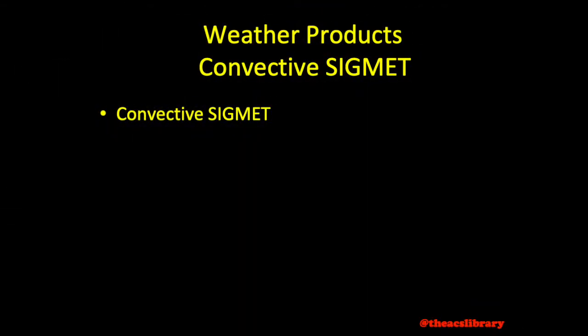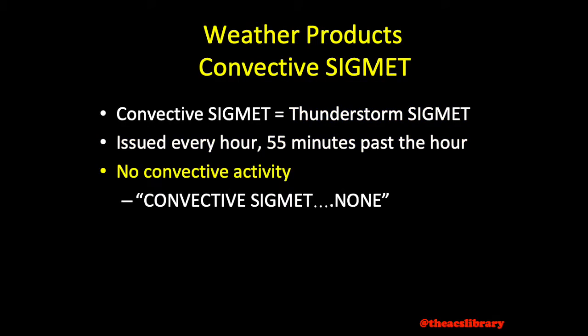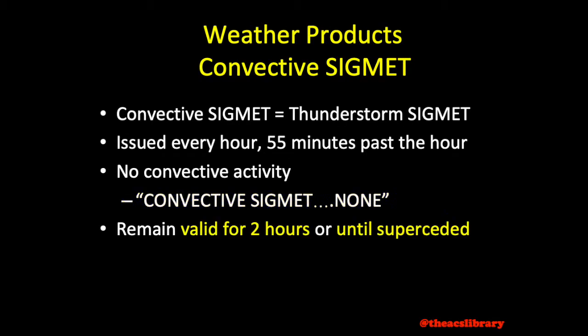Convective sigmets, or sigmets related to thunderstorms, are issued hourly at 55 minutes past the hour. If no convective conditions are encountered, a convective sigmet "none" message will be transmitted. Unscheduled sigmets may be issued as conditions require. Convective sigmets remain valid for two hours or until the next convective sigmet is issued.